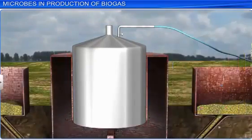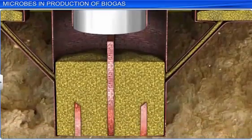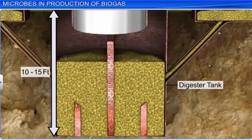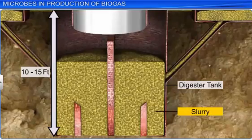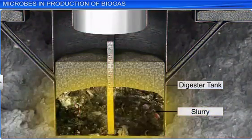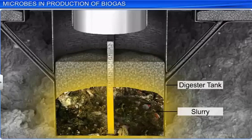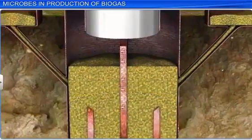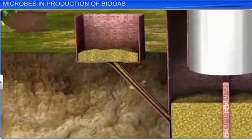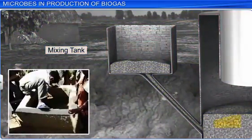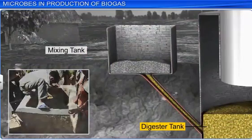A biogas plant usually consists of a concrete tank that is 10 to 15 feet deep, where slurry of dung and other biowastes like plant and animal remains is placed. The biowastes and cattle dung in the slurry are first soaked in water and mixed in the mixing tank, before they are allowed into the main tank, so that they provide the bacteria a suitable medium to grow.